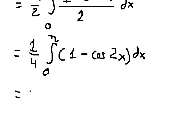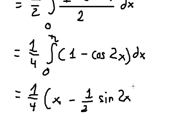Now we have the integration of 1, we have x. The integration of cos 2x, we have 1 over 2 sin 2x. And later that, we put the bounds from 0 to π.